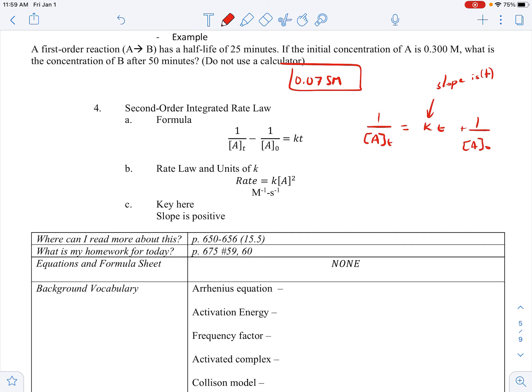So if we graph one over concentration versus time and get a straight line, you know it, we have a second order. And that has often been a multiple choice question where they have shown three graphs and you have to pick out the line that is straight and you have to say it's zero, first, or second based on the graph. Or you might have to graph it if it's on the free response. Okay, see you next time.